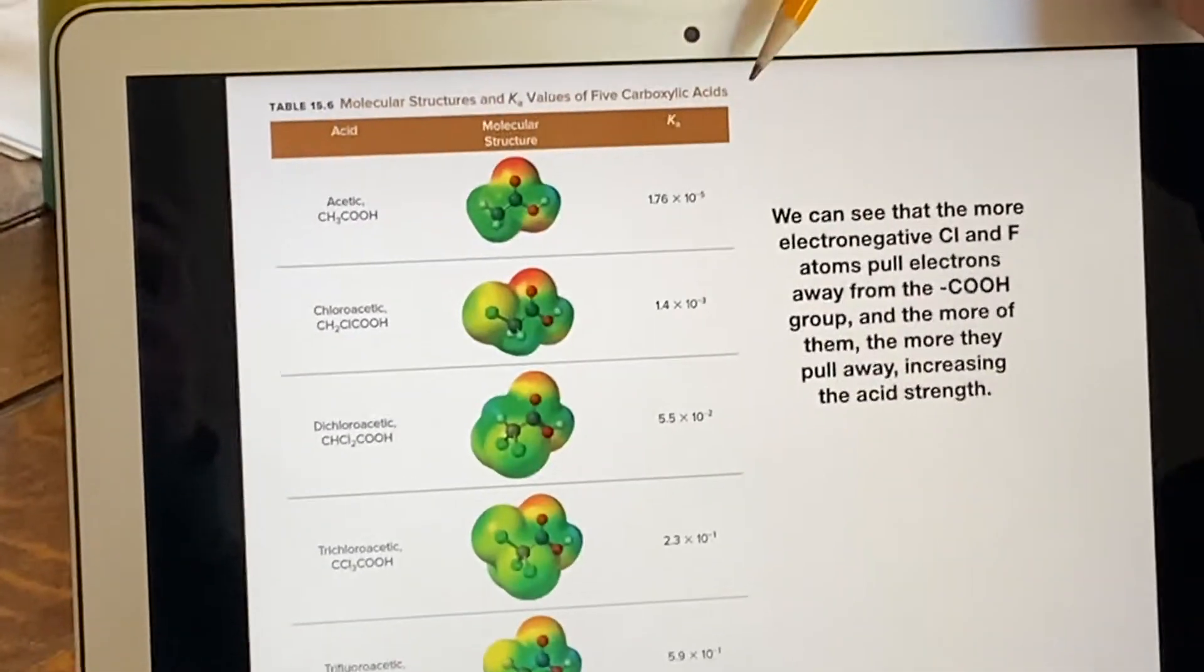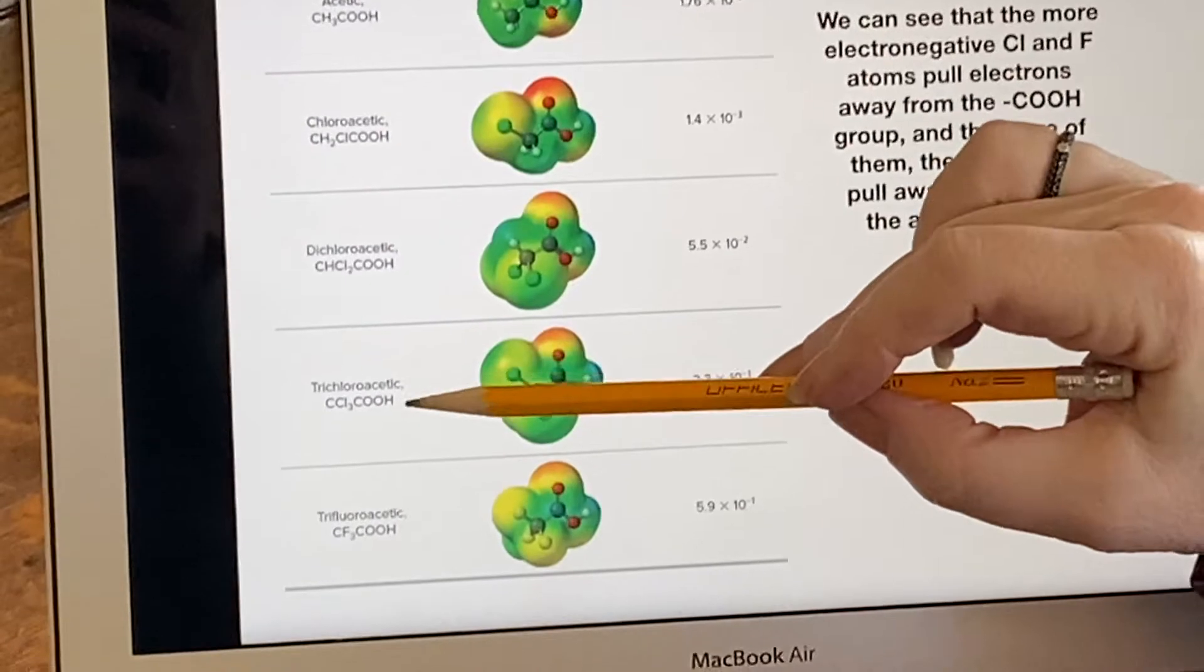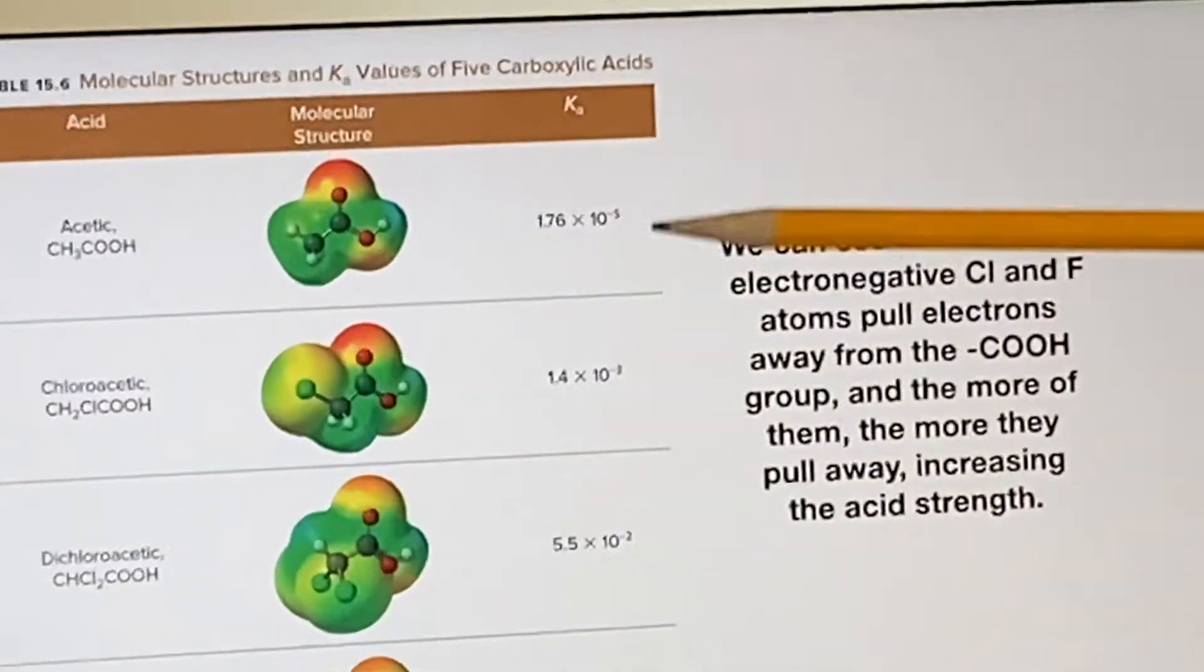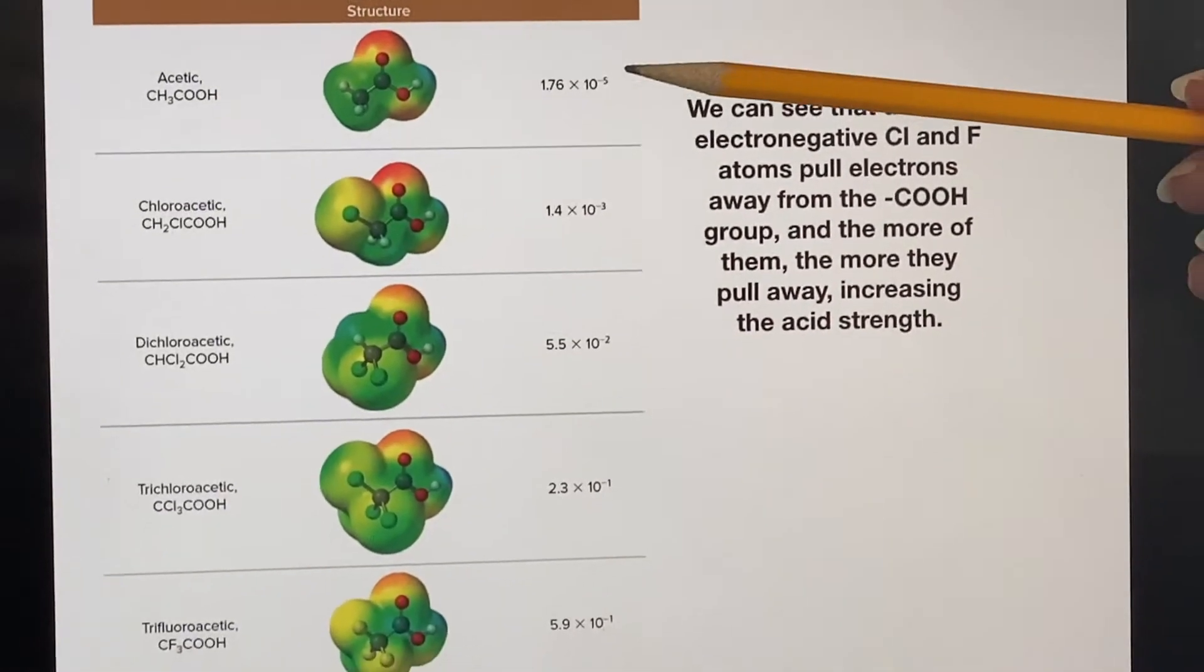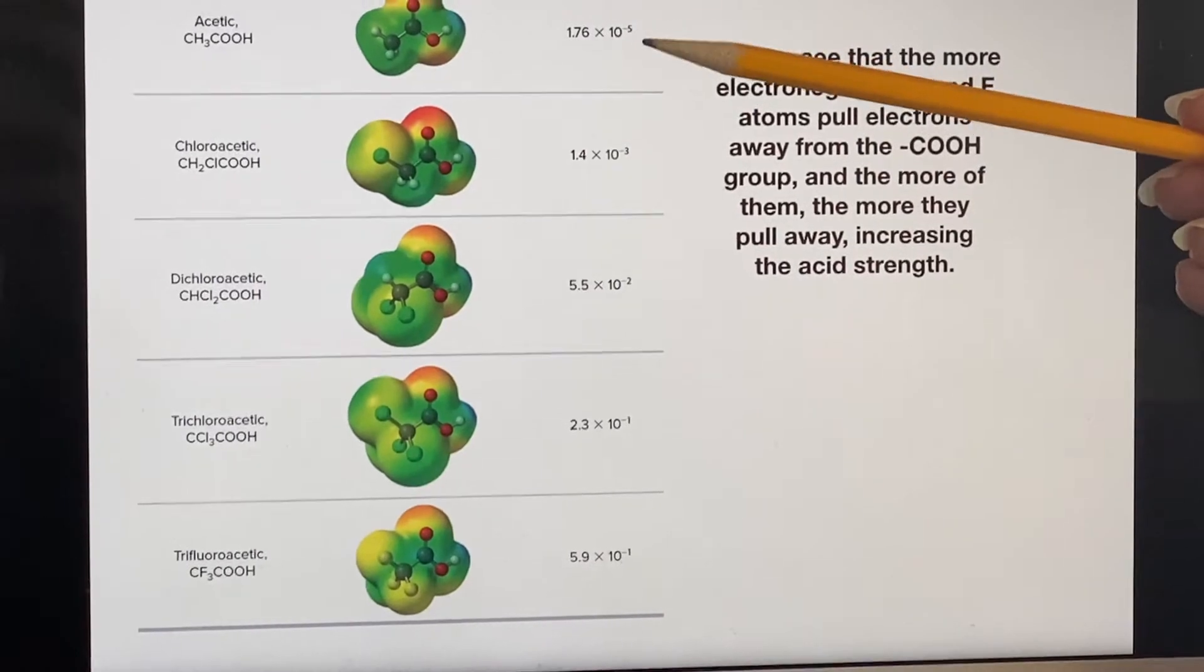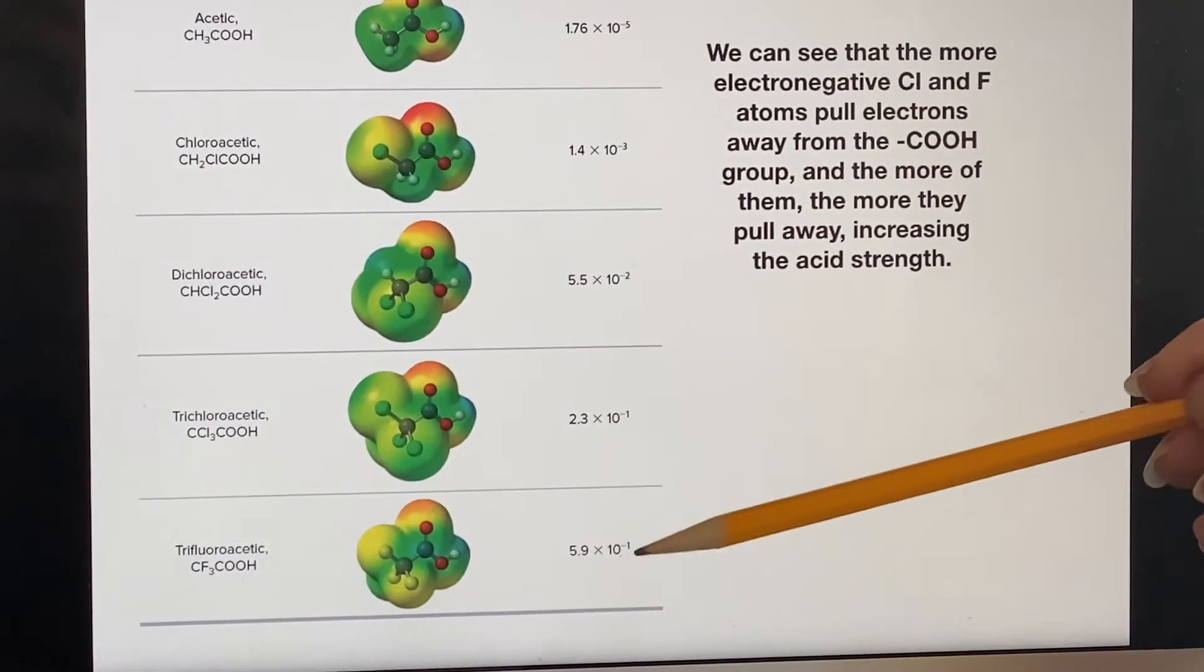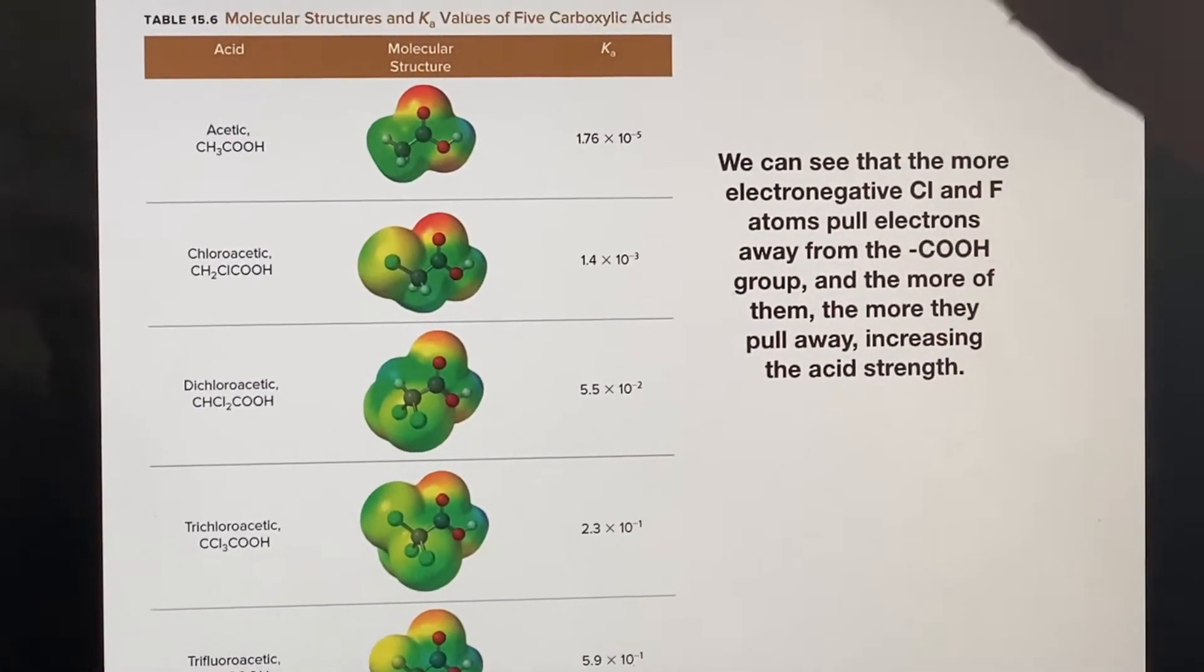Five different carboxylic acids. See, they all end in the COOH group that I was talking about before. If we look, we can see that they are all weak acids, but we can see that as we go down this group they are getting stronger. This was 10 to the minus 5th; by the time we get down here it's 10 to the minus 1. This is a lot stronger—the Ka is much larger.